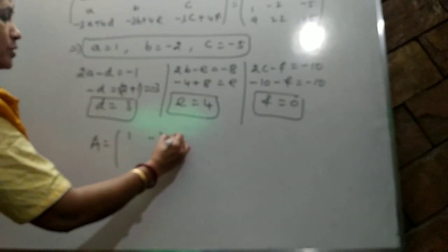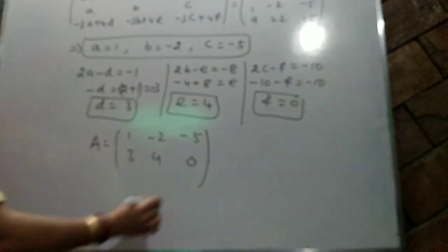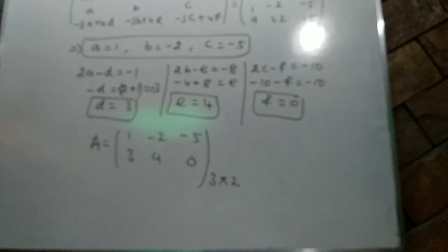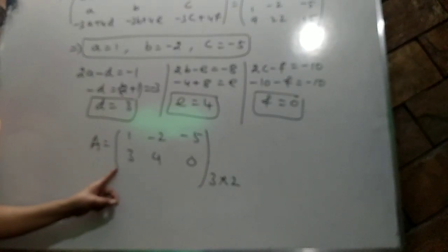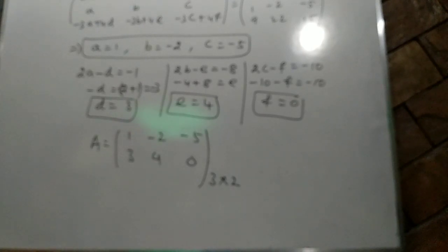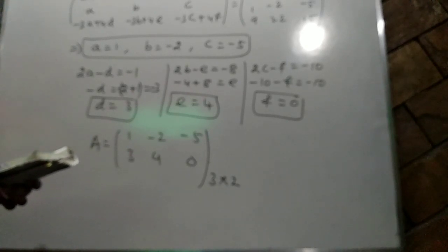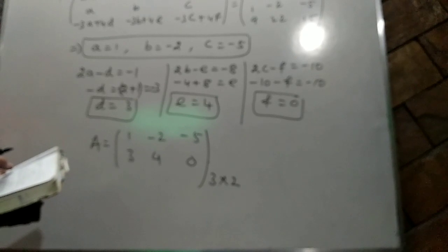So the final answer for A matrix is [1,-2,-5; -3,4,0], order 3×2. This question is from the NCRT exemplar. Are you clear?